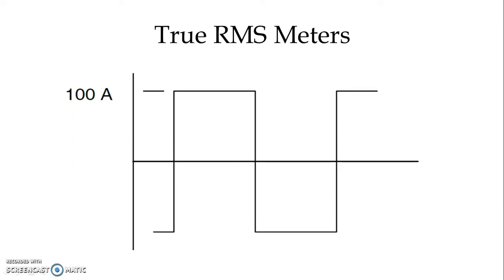An average value reading meter will measure 100 amperes and multiply it by 1.11, giving an RMS value of 111 amperes.